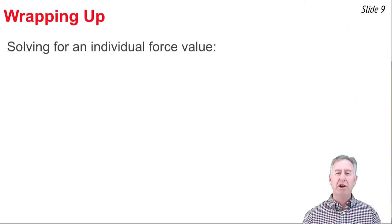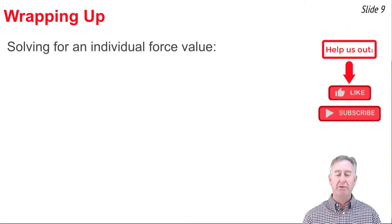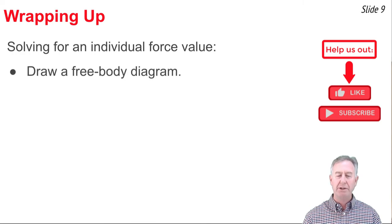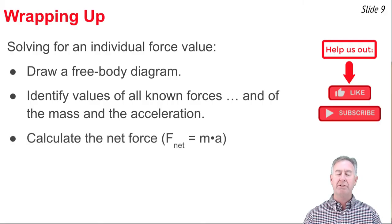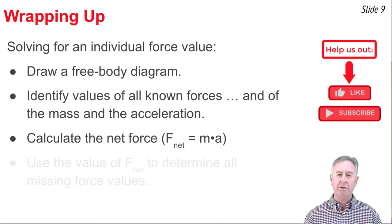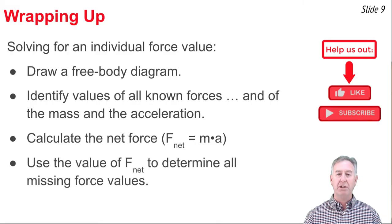In this video we've been solving for individual force values. When you know values of m and A, here are the steps: first and always, draw a free body diagram and represent all individual forces with force arrows. Identify any forces you know and write them in the diagram. Also identify the values of m and A. Then calculate the net force, which tells you how much bigger one force is than the other, allowing you to calculate the value of any unknown force.